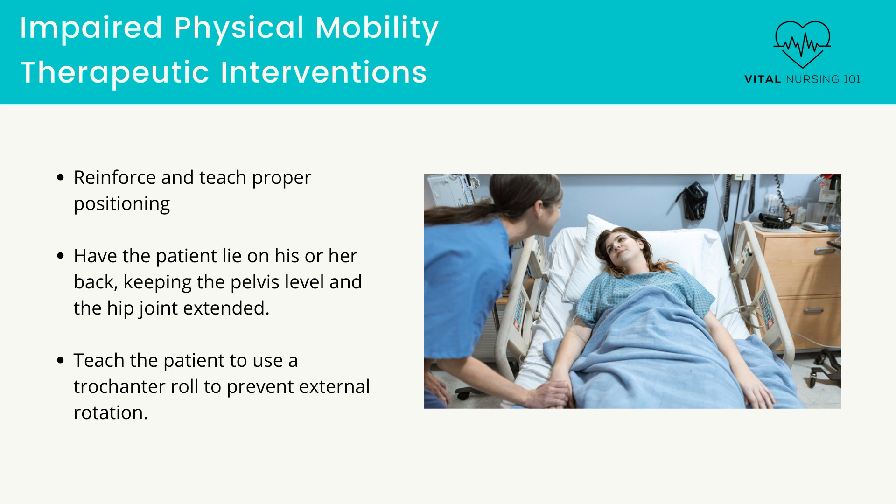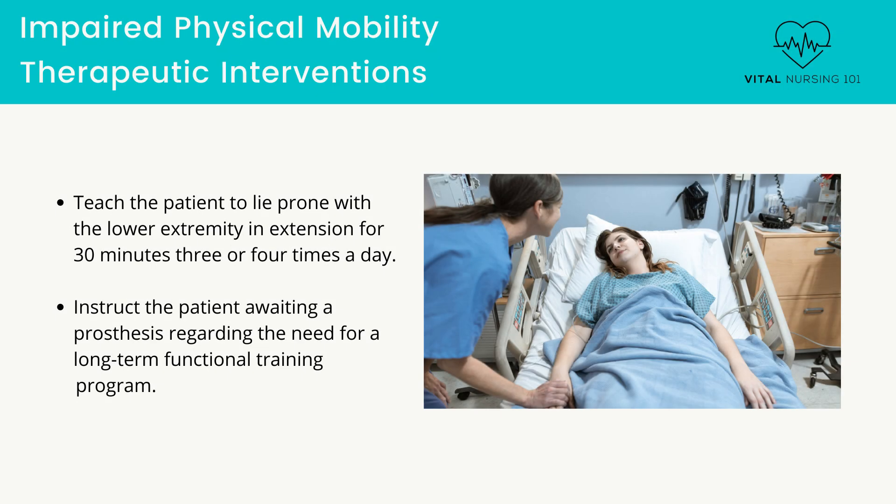Teach the patient to use a trochanter roll to prevent external rotation, as the residual limb will have the tendency to externally rotate the hip on the affected limb. Teach the patient to lie prone with the lower extremity in extension for 30 minutes, three or four times a day. This activity prevents flexion contracture, especially in the patient who is in a sitting position for long periods of the day.